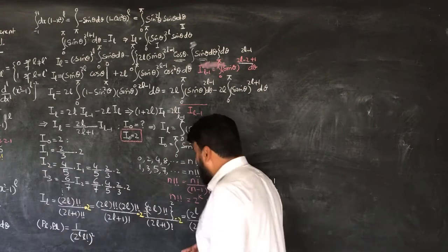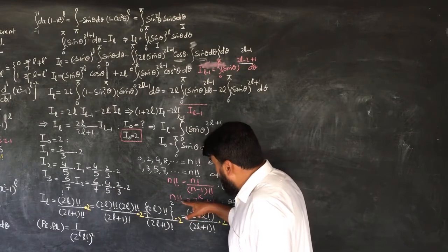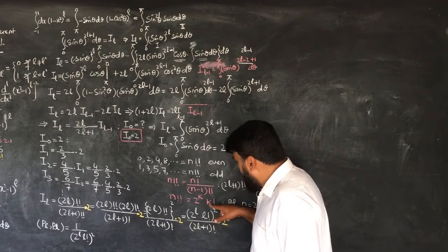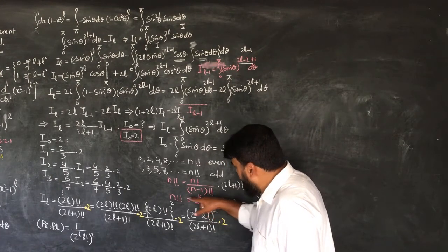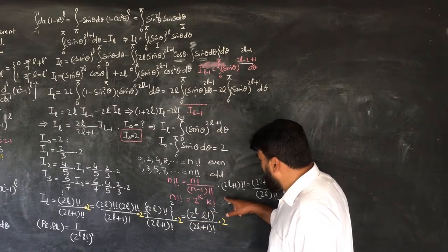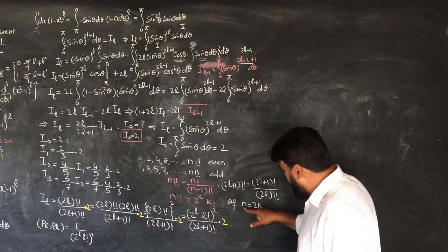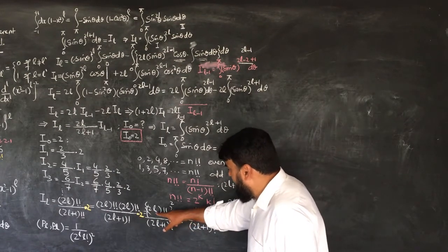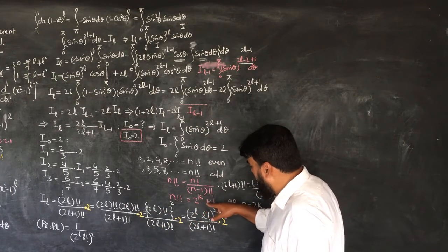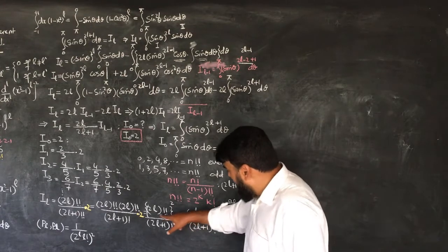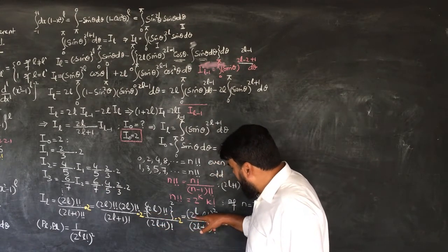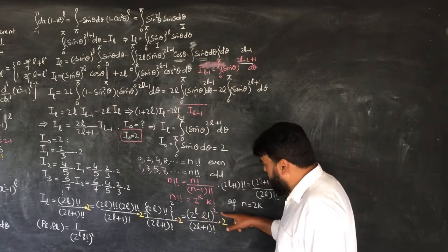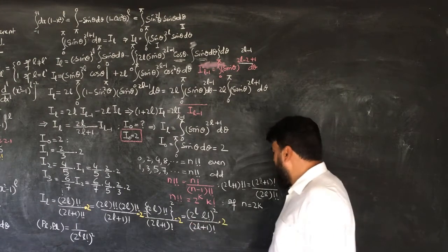So if for 2L+1 double factorial I put this value, then 2L double factorial will come up, and 2L+1 single factorial will be here. So I can write 2L double factorial, and 2L double factorial squared gives 2L double factorial whole square by 2L+1 factorial, multiplied by 2. Now, there is another key relation: for any positive integer k, if n equals 2k — as we have 2L — and we take the double factorial, then 2L double factorial equals 2 to the power k times k factorial, so 2 to the power L times L factorial. The whole square comes in, giving 2L+1 factorial and multiplied by 2.